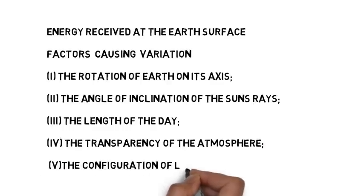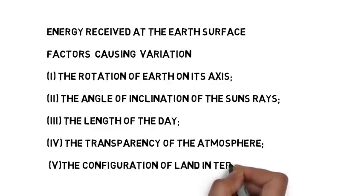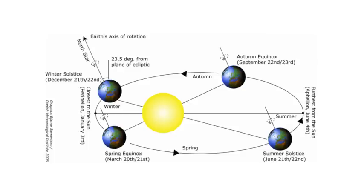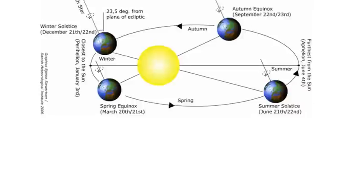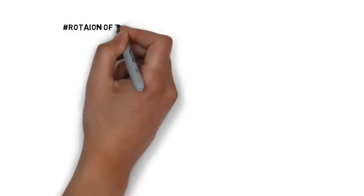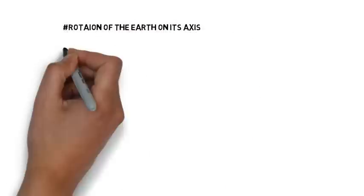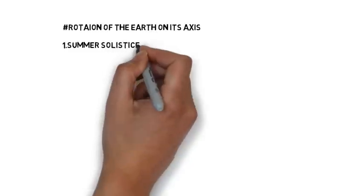Among these reasons, the first two — the rotation of earth on its axis and the angle of inclination of the sun's rays — are the most important, and we will try to understand both of these in detail. The earth's axis makes an angle of 66 and a half degrees with the plane of its orbit around the sun, which means that different latitudes receive different amounts of insolation throughout the year. This causes solstice and equinox.